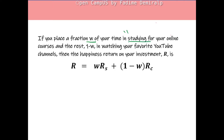If you place fraction W of your time in studying and the rest, 1-W, in watching YouTube, then the happiness return R equals W times RS plus 1-W times RC. A new variable R is defined using random variables RS and RC whose means and standard deviations are known, but the mean and standard deviation of R are not given.